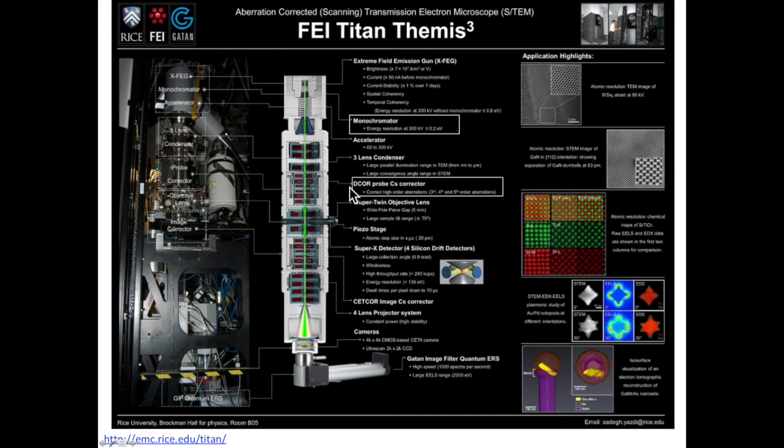The probe corrector sits between the condenser system and the objective system. You turn on the probe corrector when you do the atomic level STEM, the scanning transmission electron microscopy. The image corrector sits between the objective system and the projector system. You turn on the image corrector when doing the hi-res TEM to minimize the delocalization. Because there are two CS correctors in this TEM, it is also called the double-corrected TEM.